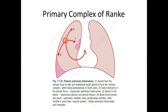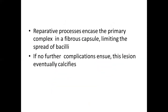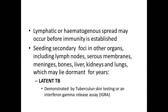The spread of the organism to the hilar lymph nodes leads to a similar pathological reaction. A reparative process forms a fibrous capsule limiting the spread of the bacilli, and in 95% of cases there are no further complications — the lesion eventually calcifies. Alternatively, lymphatic or hematogenous spread may lead to extra-pulmonary tuberculosis in sites like bone, liver, or kidney. A patient may also have latent tuberculosis, which is demonstrated by the tuberculin skin test or an IGRA test — the interferon gamma release assay.